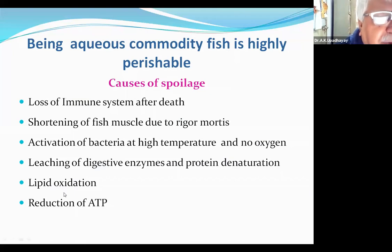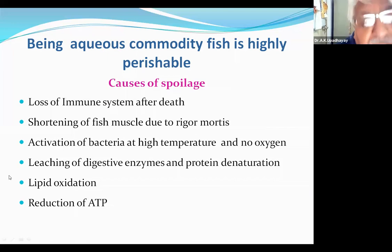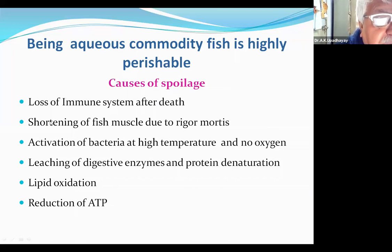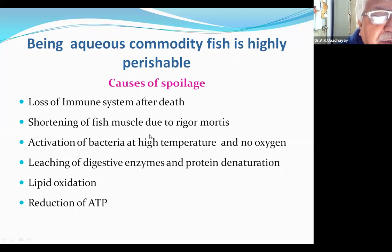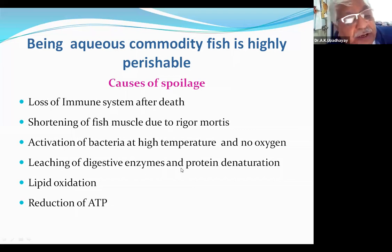These are the common causes of fish spoilage. All these processes set in the fish very early, even though they may be common for other meat products. The causes include: loss of the immune system after death, shortening of fish muscle due to rigor mortis, activation of bacteria at high temperature and low oxygen, leaching of digestive enzymes, protein denaturation, lipid oxidation, and reduction of ATP.